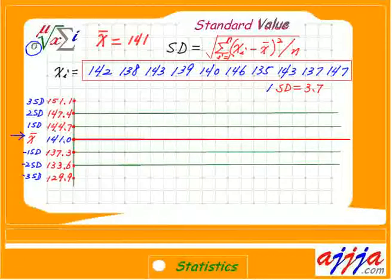Now, I'm going to add 1 SD, which is 144.7, so 2 SD, 3 SD, and so on. Then minus, minus 1 SD, minus 2 SD, so on. Now, we're going to plot all these values.